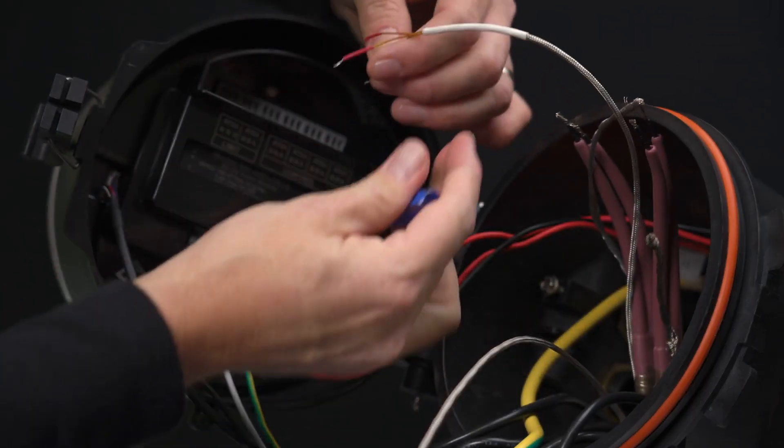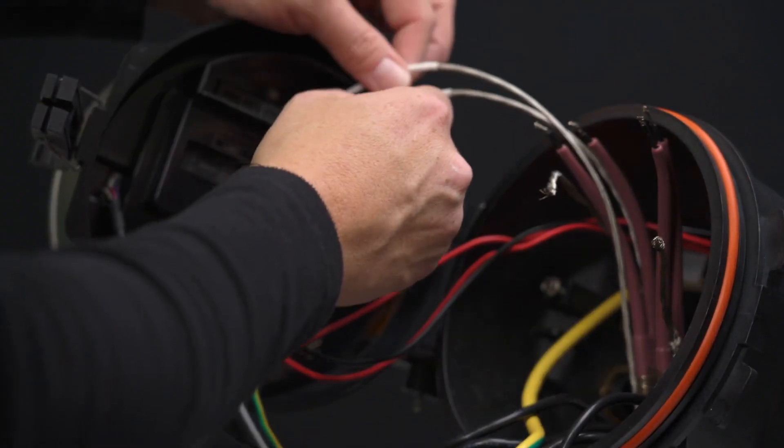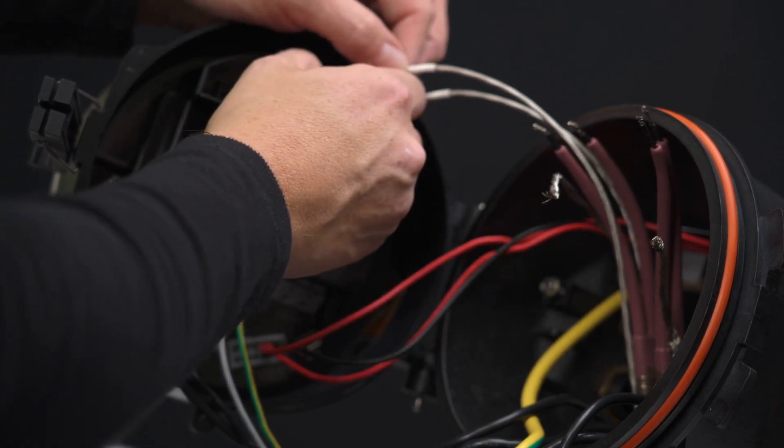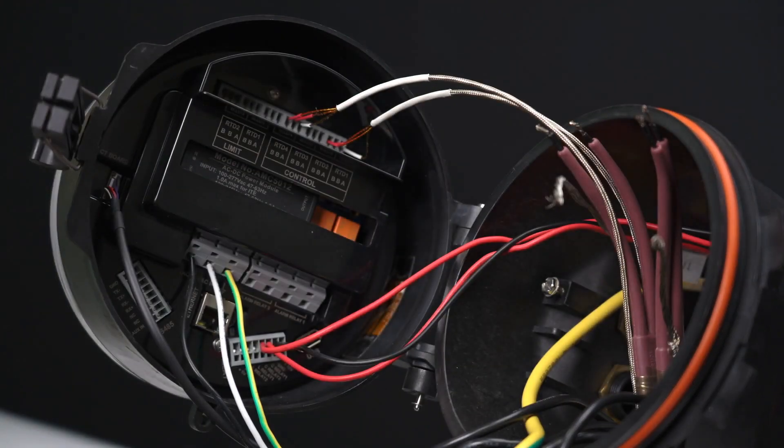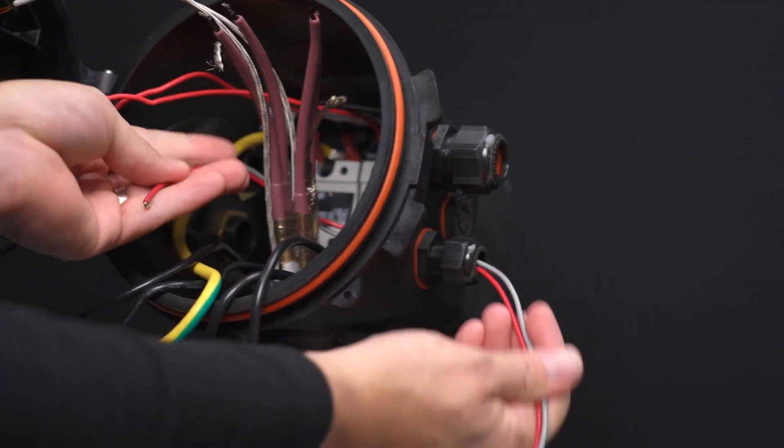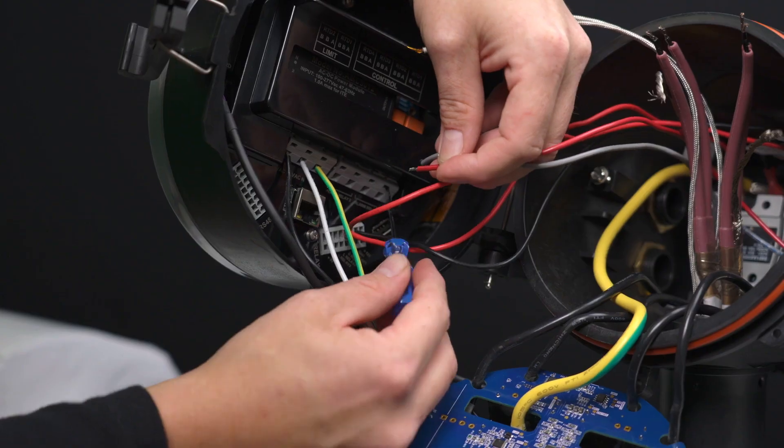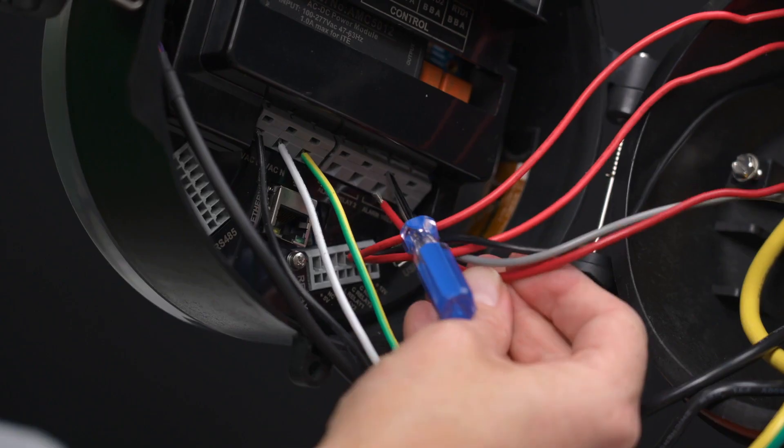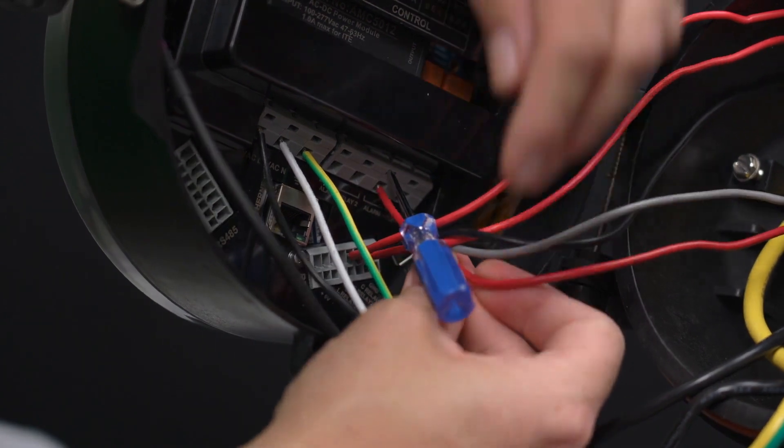Next, land the RTD wires in the front clip. For this, we will use the 2.5mm flathead screwdriver. Route the alarm wires through the cable gland. Land the alarm output wires to the front clip using the same flathead screwdriver.